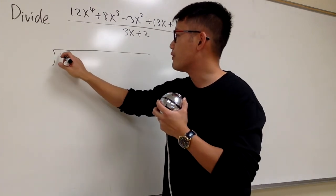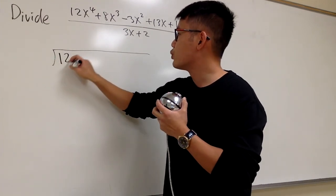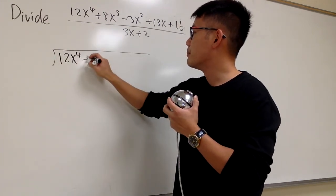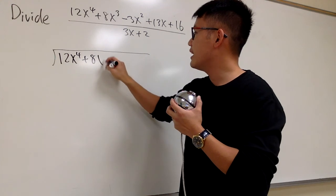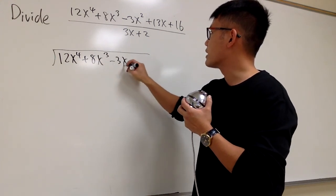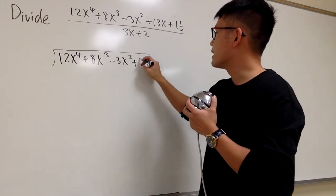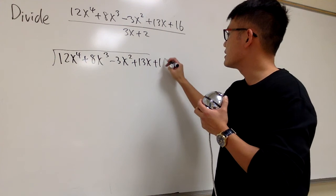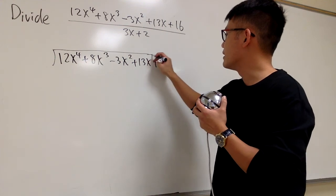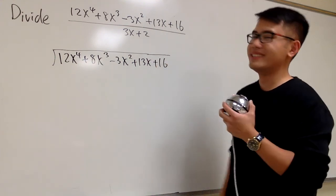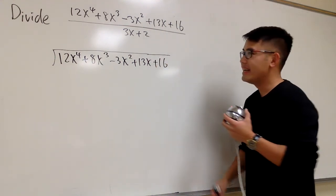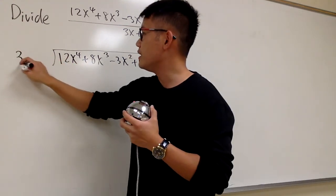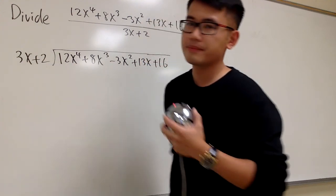So I will write them down: 12x to the 4th power, plus 8x to the 3rd power, minus 3x squared, plus 13x, plus 16. And right here we have 3x plus 2.